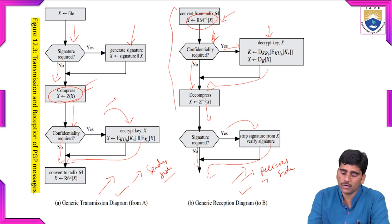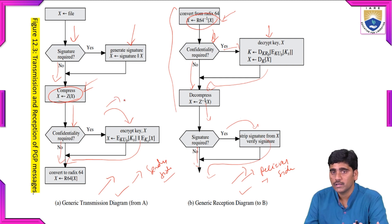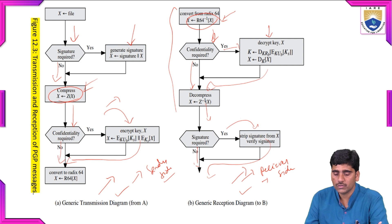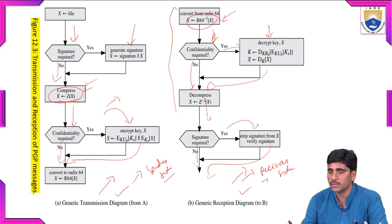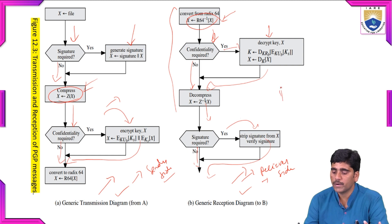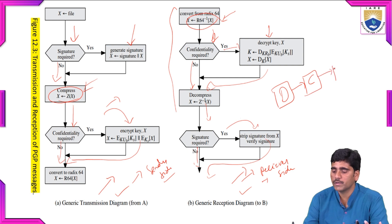This is the way mail is sent from sender to receiver. At the sender side, the message is applied with the digital signature, then compressed, then encrypted.